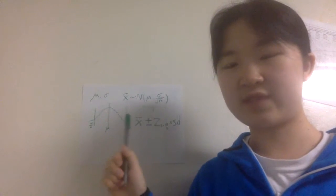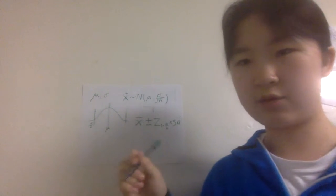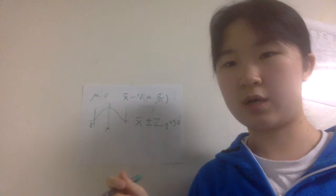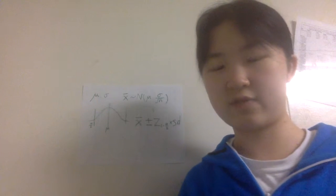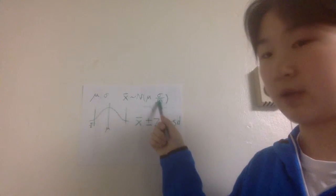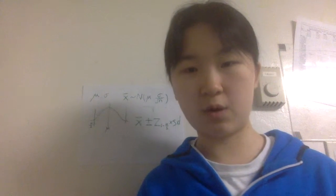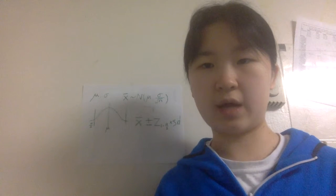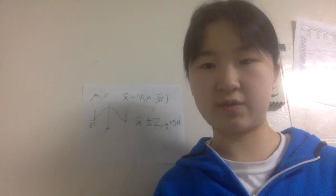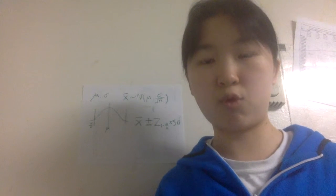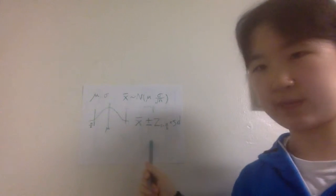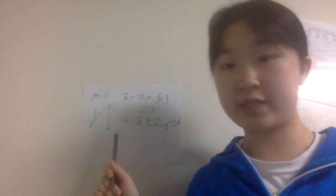We can see that if nothing else changes but you increase your sample size n, then the margin of error — which is one half of the length of your confidence interval — will be smaller, because n is in the denominator. This means that with a larger sample, at the same confidence level, we get a narrower confidence interval, so our estimate is more precise than with a smaller sample size.